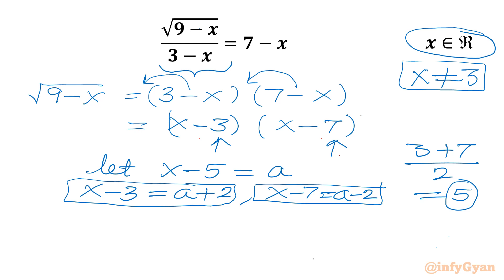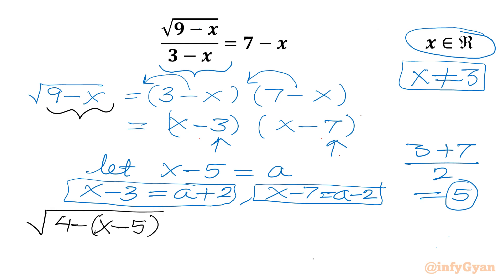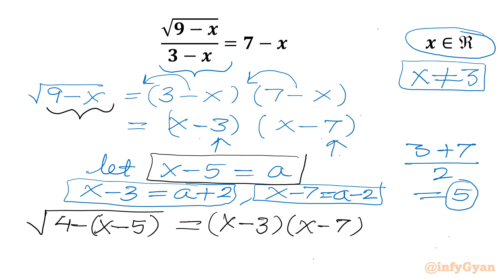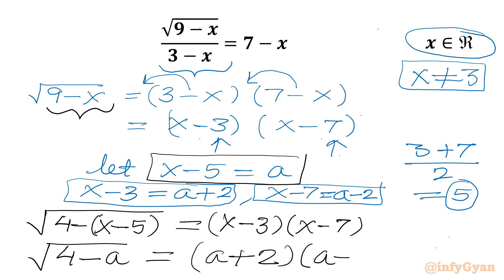For the left hand side, 9 minus x can be expressed as 4 minus (x minus 5), which is 4 minus a. You can verify: 4 minus (x minus 5) is still 9 minus x. So RHS is (x minus 3)(x minus 7). Applying our substitution, left hand side becomes 4 minus a, and right hand side becomes (a plus 2)(a minus 2).